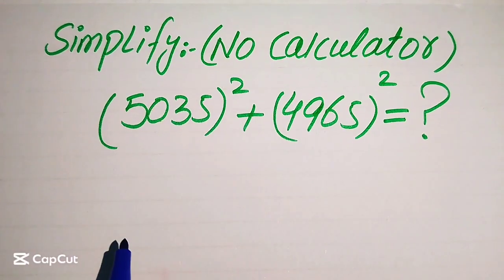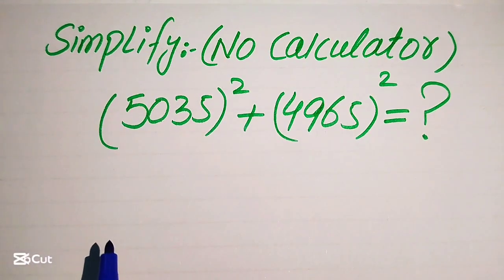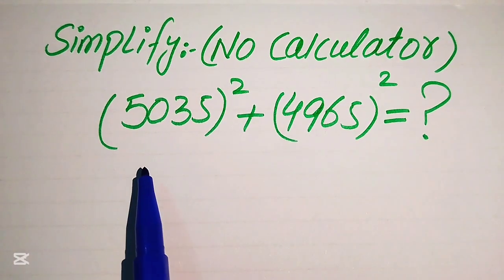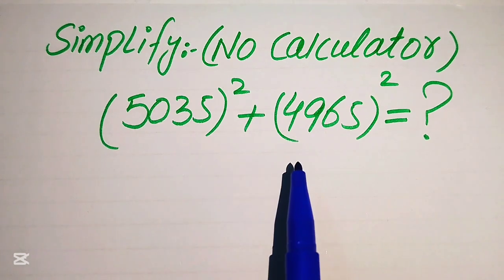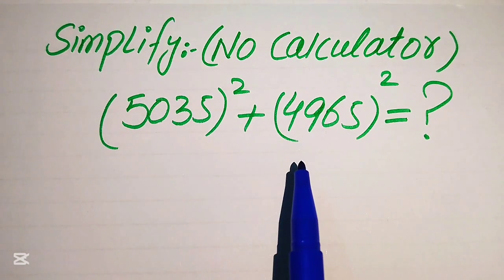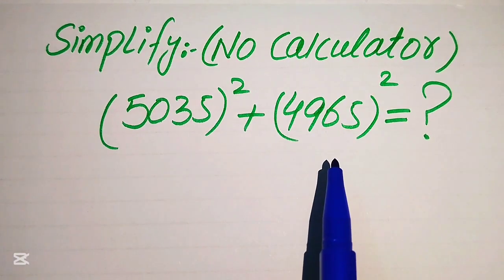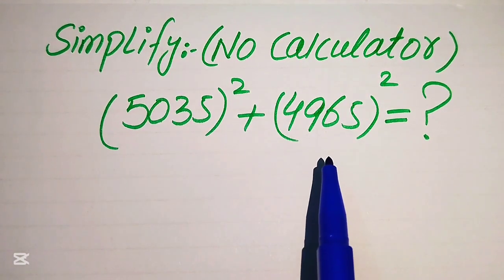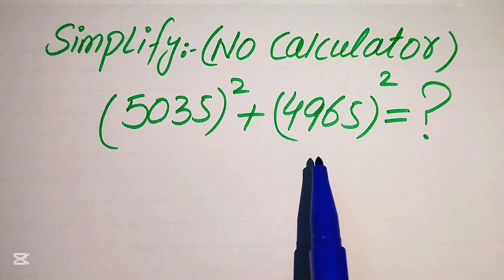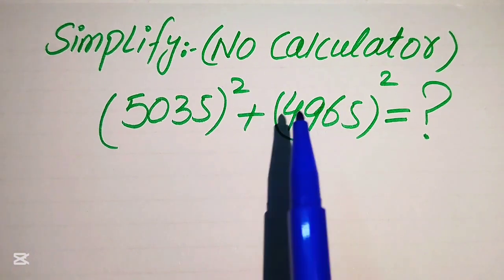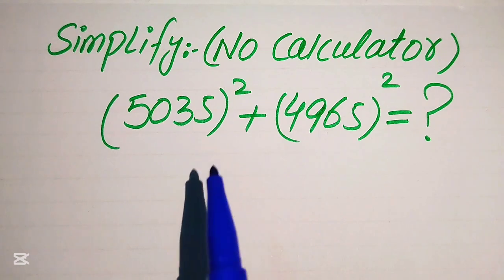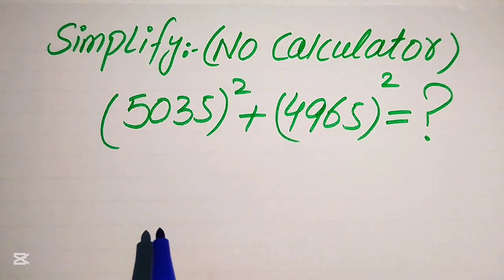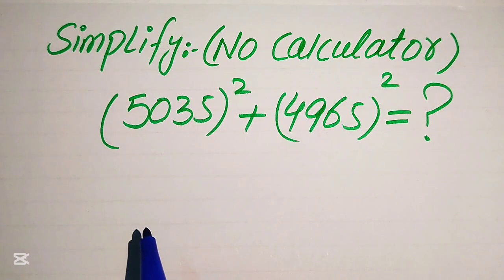Hello everyone. How to simplify this nice algebraic expression: 5035 squared plus 4965 squared. We simplify this algebraic expression without using a calculator — remember that a calculator is not allowed — which means we will show all of the working on this paper.